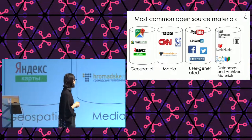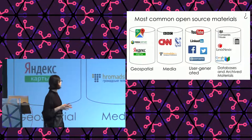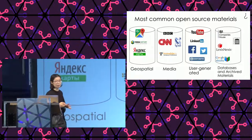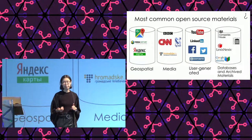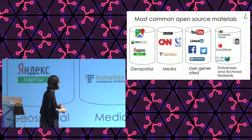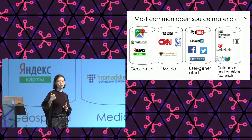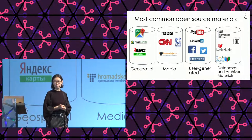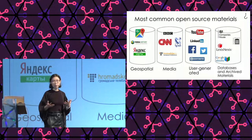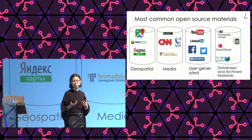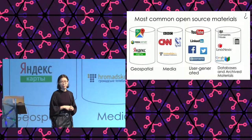Open source materials fall into four categories. First is geospatial — the fancy word for mapping services — things like Google Maps, Yandex Maps, Terra Server, Planet subscription, and so on. This is very useful for geolocation: if you have a photo and want to find out where exactly it was taken, or verify that an image shows the Netherlands and not Belgium, mapping services help a lot.